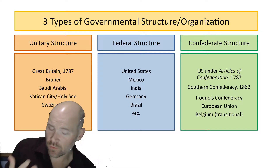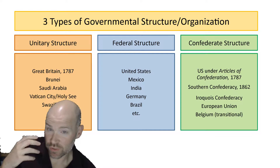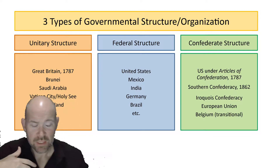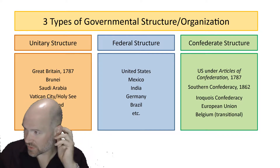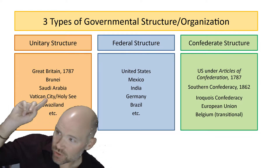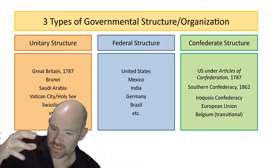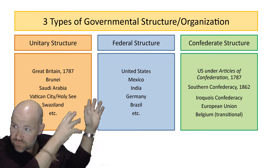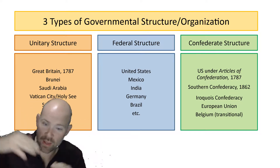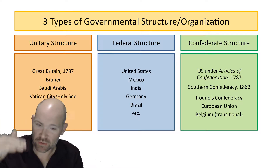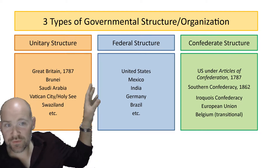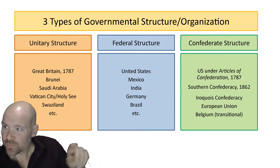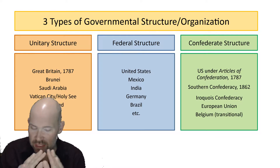You've probably come across the idea of a unitary system versus a federal constitution. Think about unitary Great Britain — the idea that parliament is sovereign and all power ultimately rests in that one place — versus a federal structure where power resides in multiple places, both in the federal government and the state government. But there's also a third option: a confederate structure. America tried this in 1787 and it failed completely.